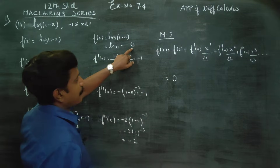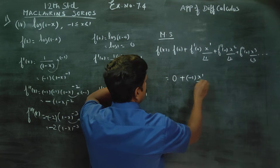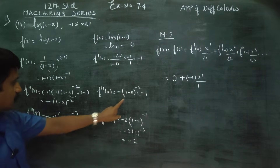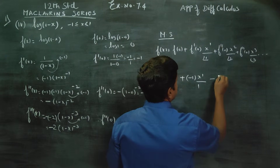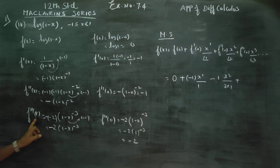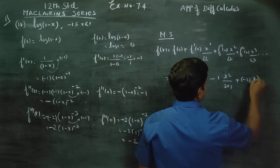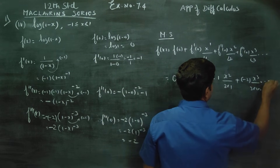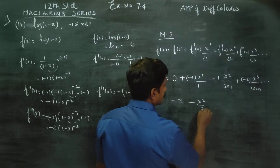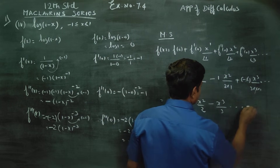Substituting: f(0) equals 0. f'(0) equals minus 1, so the term is minus 1 times x by factorial 1. f''(0) equals minus 1, so the term is minus 1 times x squared by factorial 2. f'''(0) equals minus 2, so the term is minus 2 times x cubed by factorial 3. Simplifying, 2 cancels with factorial 2, giving minus x minus x squared by 2 minus x cubed by 3, and so on.